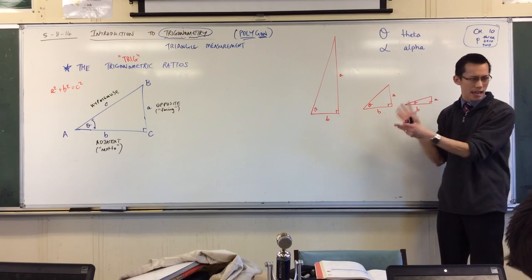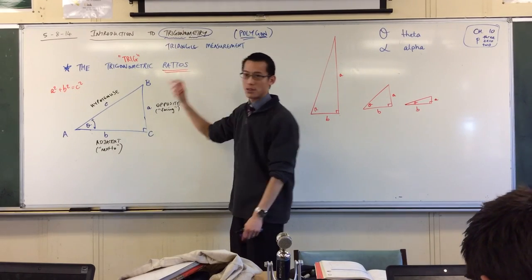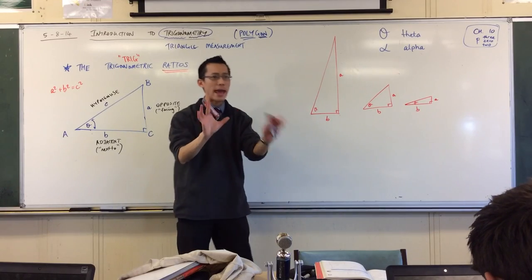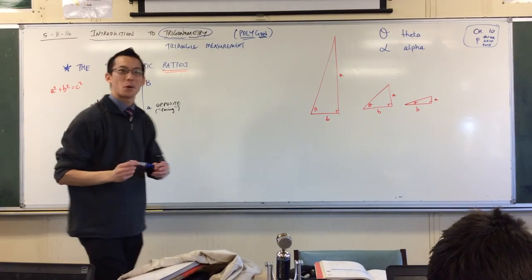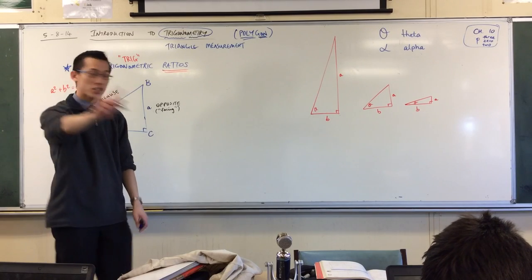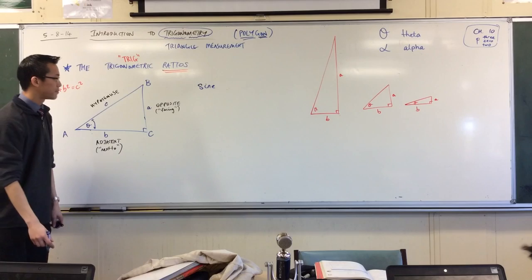So to try and understand what this relationship is we introduce these three ratios, which is like what's a ratio? It's when you compare two different quantities. And the ratios have fancy names, and I'm going to teach them to you. The first ratio is called sine.